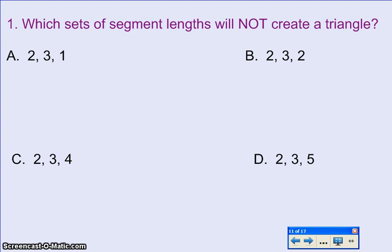So for A, when the segment lengths are 2, 3, and 1, you're going to pick the smaller two and add them together. 2 plus 1 gives you 3. Now in order for this to make a triangle, I need my sum to be bigger than the third side. Well, the third side is 3, so they equal each other. It's not bigger, so this one will not create a triangle.